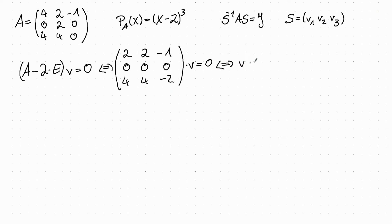This is equivalent to the condition that twice the first entry plus twice the second entry equals the third entry. The second row gives us nothing, and the third row gives the same condition as the first one. So the vector V is of the form (A, B, 2A plus 2B).